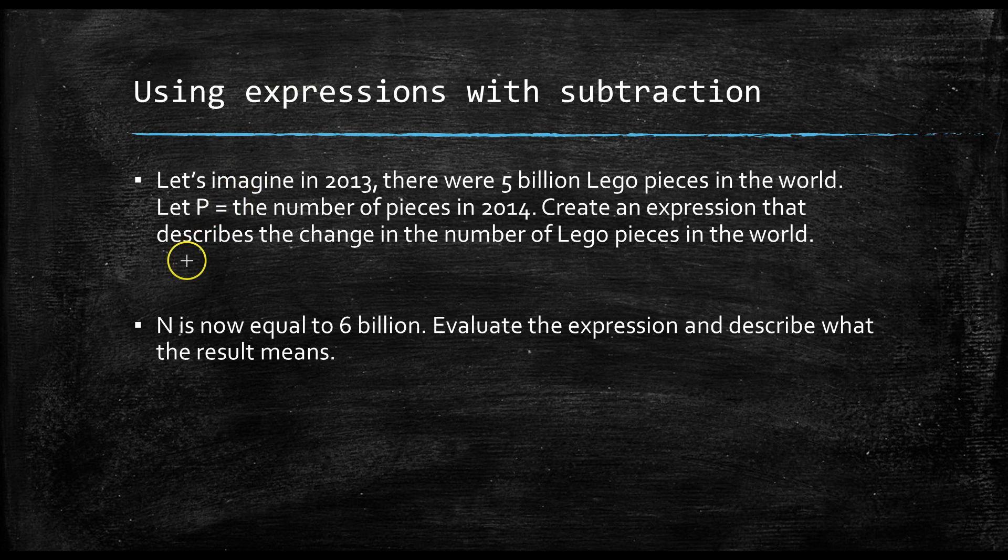We know that the change is equal to the ending minus the beginning. So, change is equal to ending. Ending is 2014. Let's just say p, because we said p is equal to the number of pieces in 2014. And let's subtract the value in 2013, which is 5 billion.